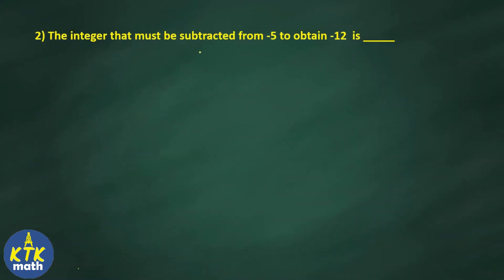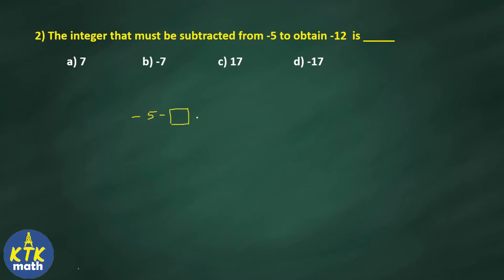Question number two: the integer that must be subtracted from minus 5 to obtain minus 12. Try to understand the question properly — from minus 5 I am subtracting some integer and the answer is minus 12. So: minus 5 minus some number gives you minus 12.